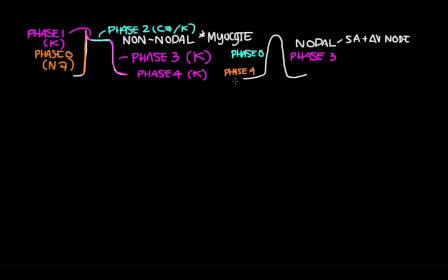In phase 4, we have a slow rise in voltage because of open sodium channels, and at the tail end of phase 4, calcium channels start opening. We hit threshold and a bunch of calcium channels open, giving us a large spike in voltage — this is phase 0, caused by calcium channels opening. There is no phase 1 or phase 2, so we go automatically into phase 3, the repolarization phase, mediated by opening potassium channels, which brings us back down to phase 4.